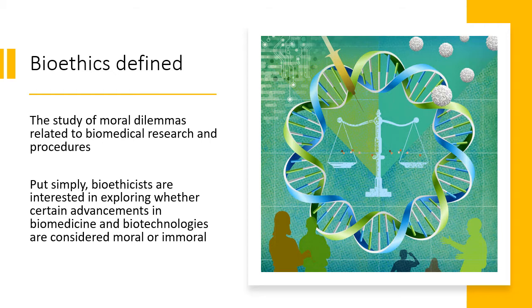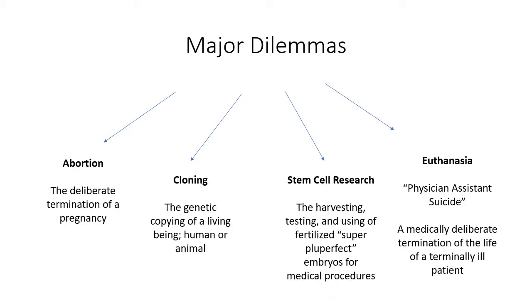So what kind of biomedical and biotechnological dilemmas are we talking about? Well, here we have a few examples: abortion, cloning, stem cell research, and euthanasia are all considered major dilemmas within the subfield of bioethics.